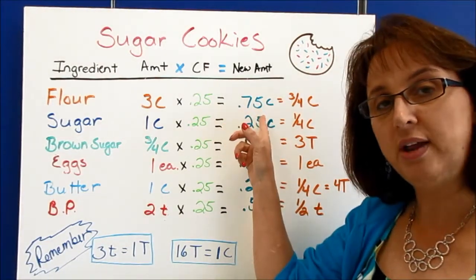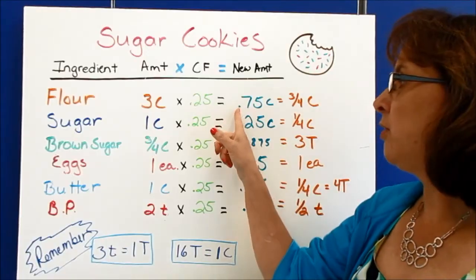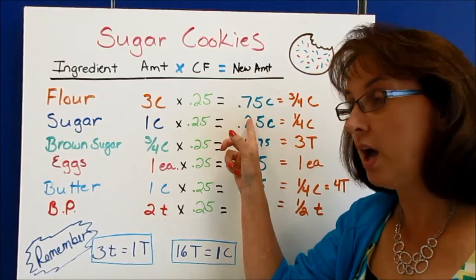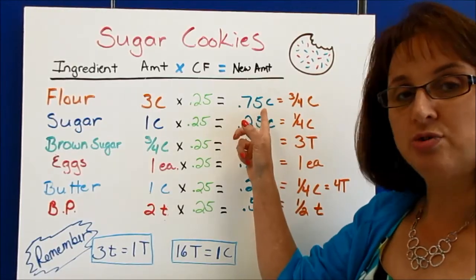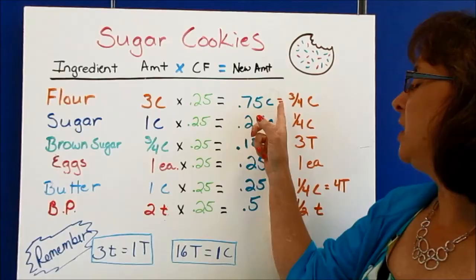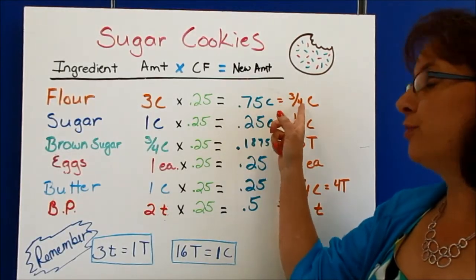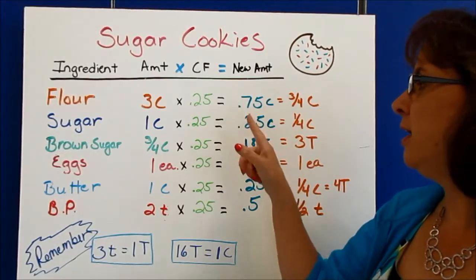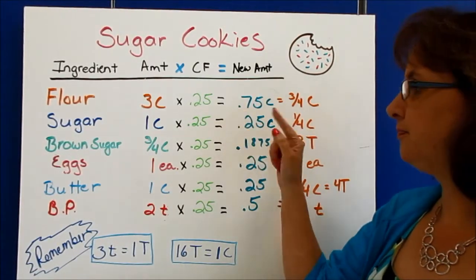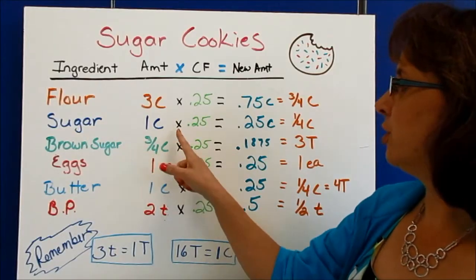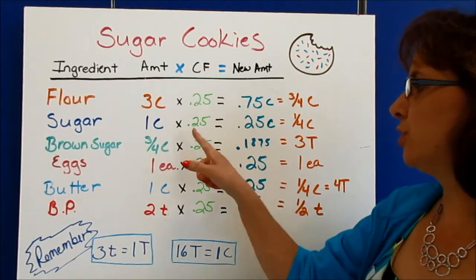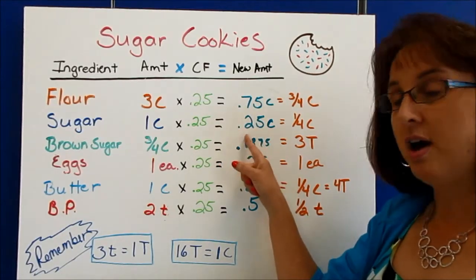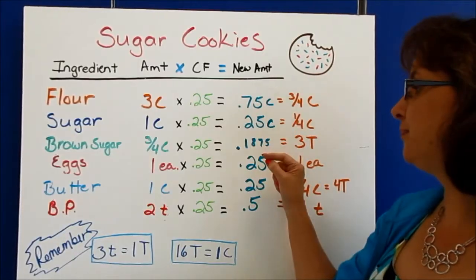Now going to step three as we go along: do we have a 0.75 measuring cup? We do not. So in order to measure our flour, we need to translate that to a fraction — that's going to equal three-fourths of a cup, and we know how to measure three-fourths of a cup. That's our common decimal. For sugar, one cup times 0.25 is 0.25, and that's another common decimal, so we'll get one-fourth of a cup.